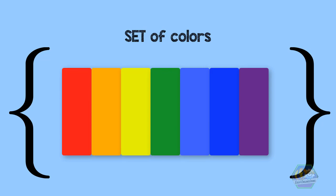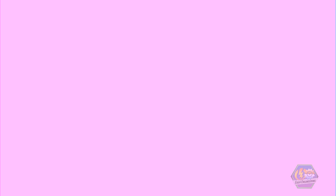But take note of this. A set simply specifies its contents. Order is not important. It means that the set represented by 1, 2, 3 is just equivalent to the set 3, 1, 2.